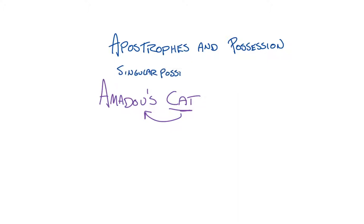For plural possession, we show that a plural noun is possessive by adding just an apostrophe, no S at the end, as in the cats' tails, right? Multiple tails, multiple cats. Those tails belong to those multiple cats.